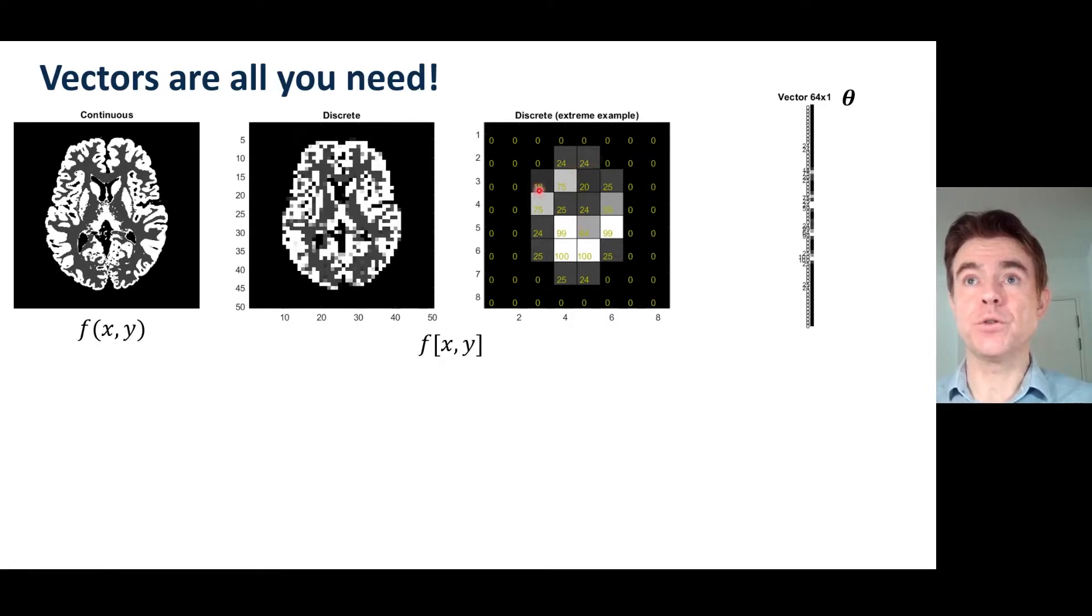And then I've got a value corresponding to the grayscale value in each of those pixels which I can basically take and stack into a column vector.